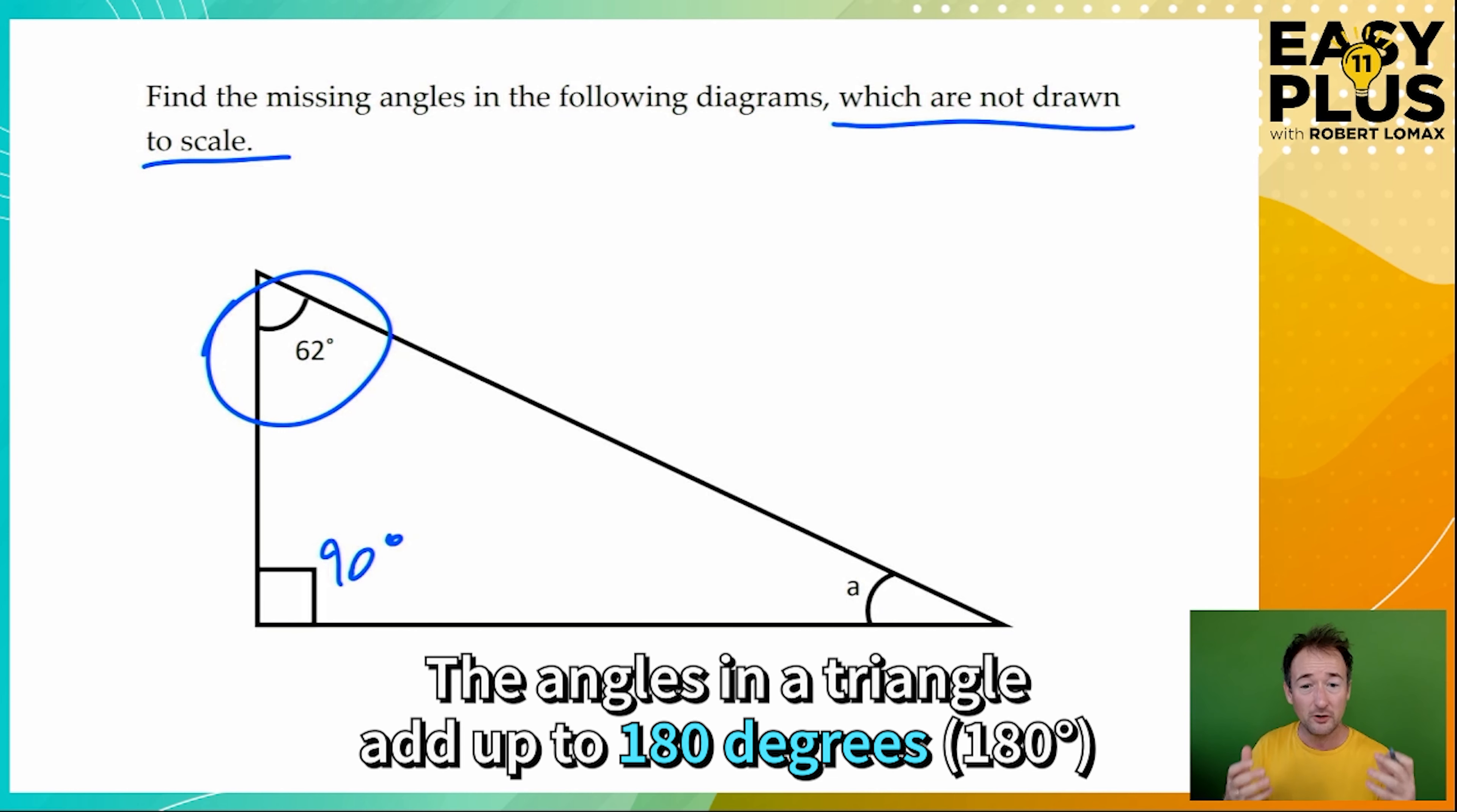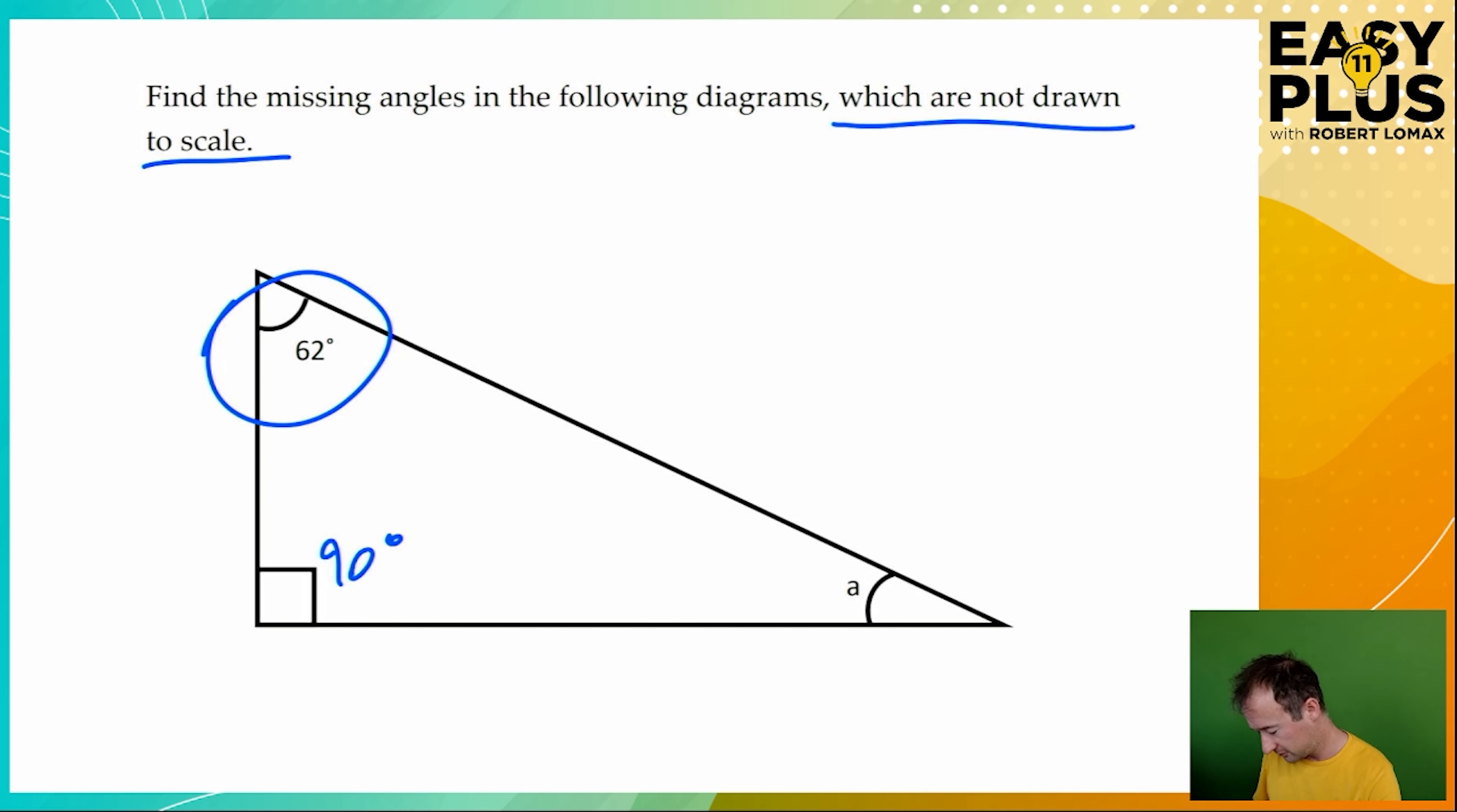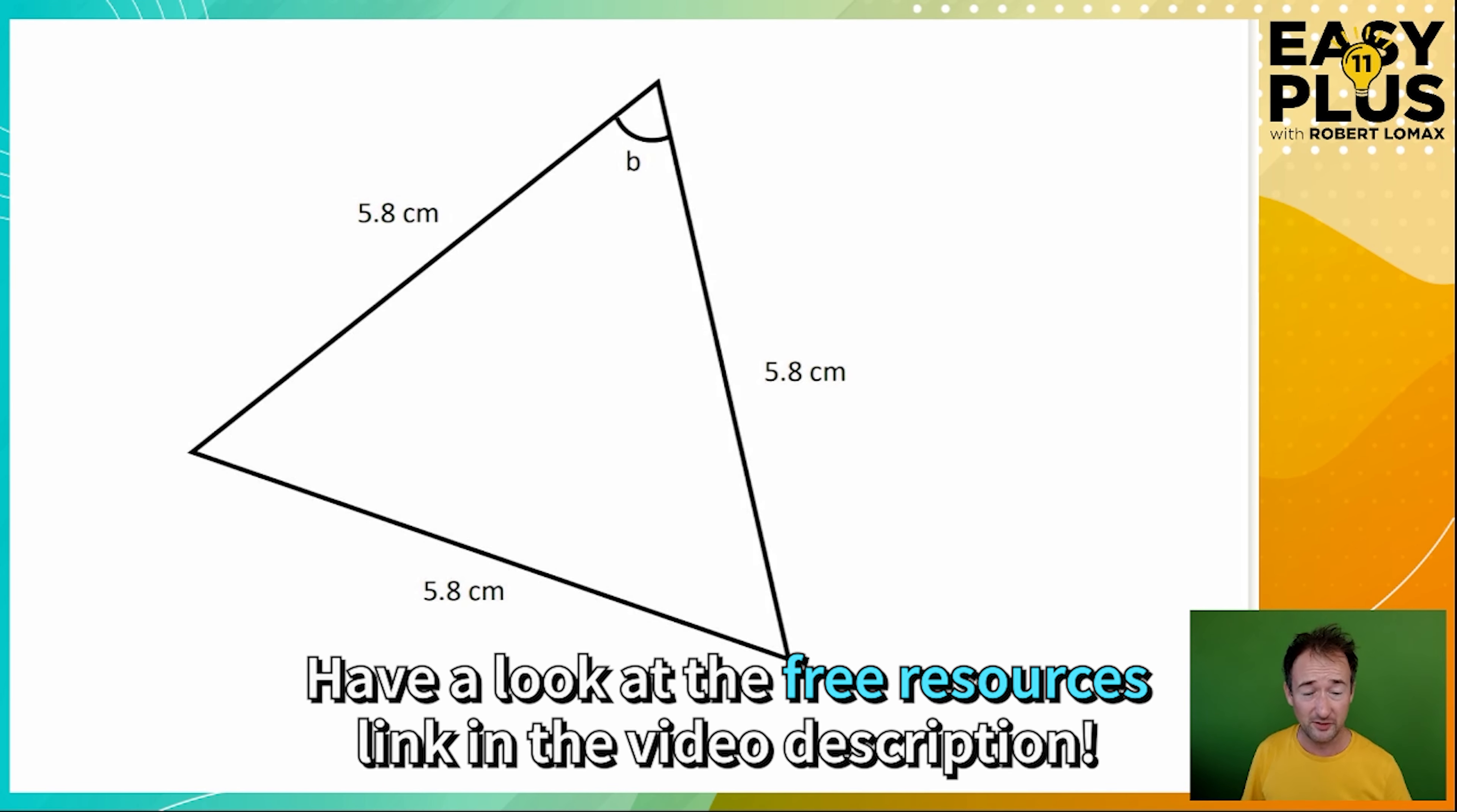So the crucial thing that you need to know, and this is absolutely essential, is that there are 180 degrees in a triangle. In other words, the three angles in a triangle will add up to 180 degrees. So we've got 90 degrees and 62 degrees. You could do a quick addition, but you can probably see that these add up to 152 degrees. There are 180 degrees in a complete triangle, and we need to subtract to find the difference. So angle A must be 28 degrees.